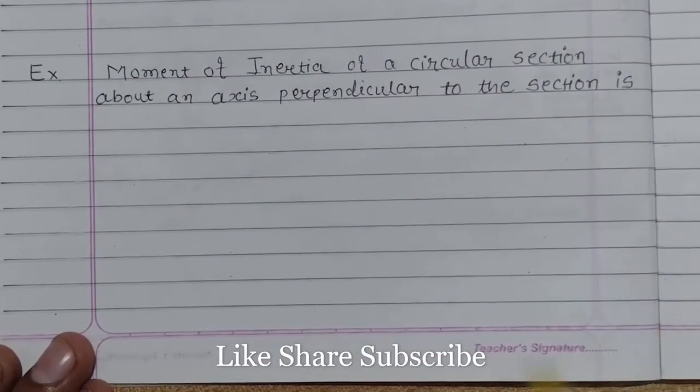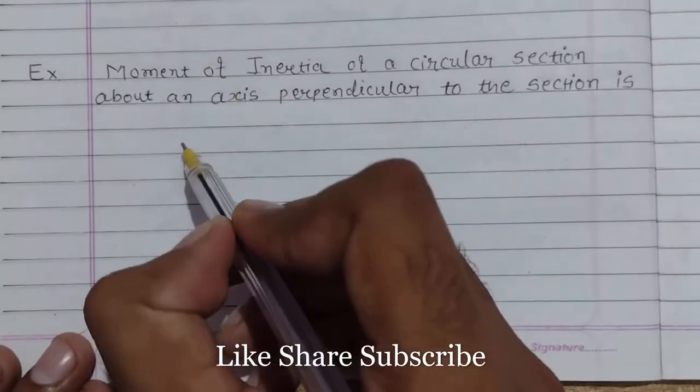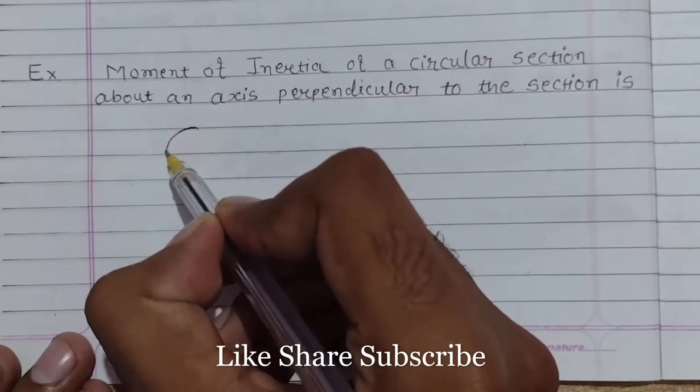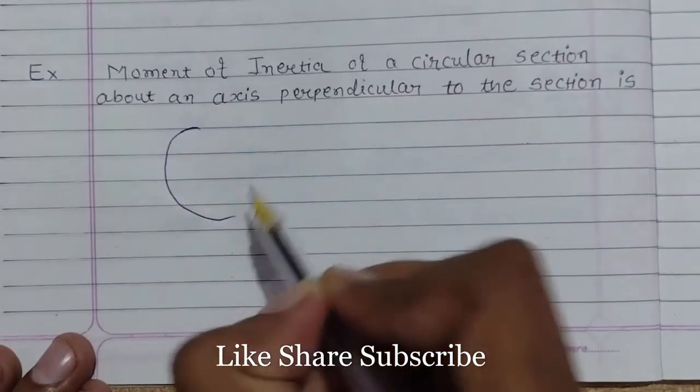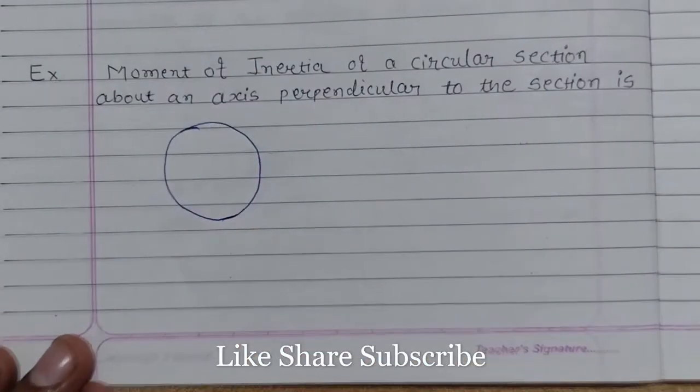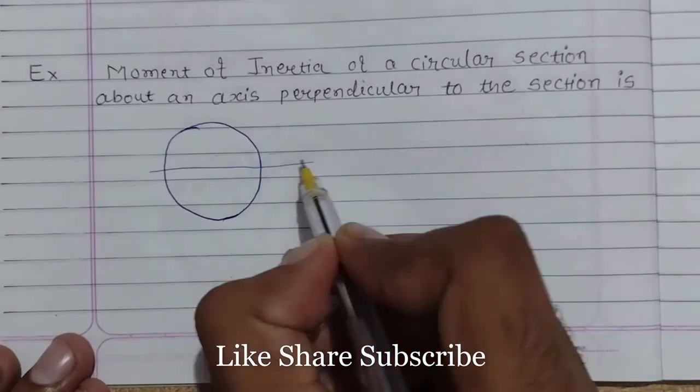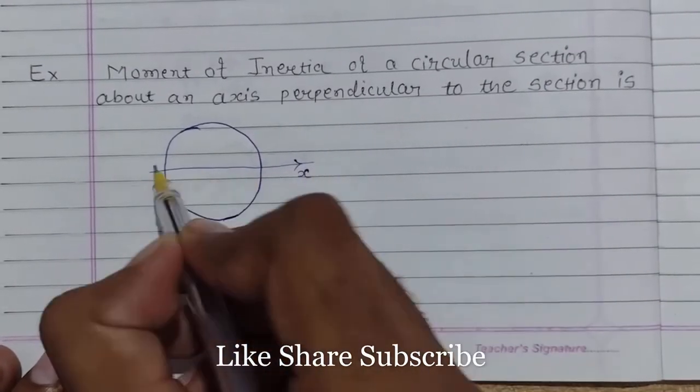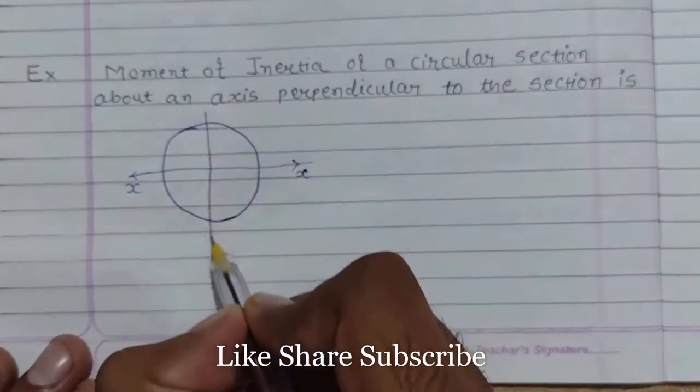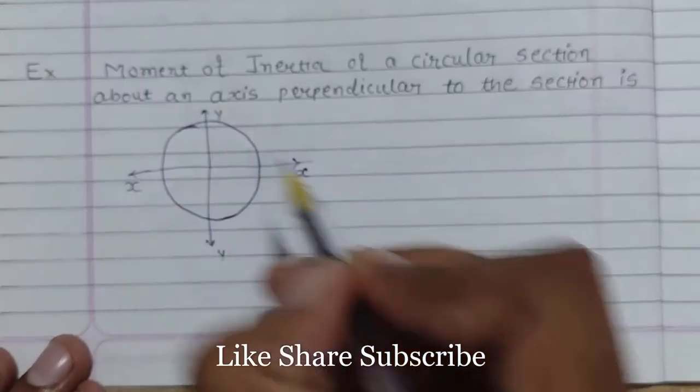First let's find out the general equation of moment of inertia of the circular section. Let's say this is the circular section. If we want to find out the moment of inertia about the axis Ixx, let's say this is our axis x-x, this is our axis y-y.